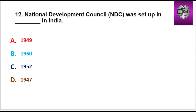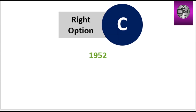Next question: National Development Council (NDC) was set up in which year in India? Options are 1949, 1960, 1952, 1947. Right option is C: 1952.